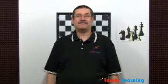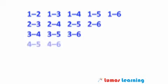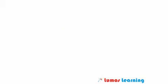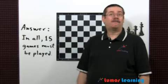To answer the first part of this question, I recommend you make an organized list of all possible pairings between two players. Here's what it could look like. When you count up the pairings, you get the following.